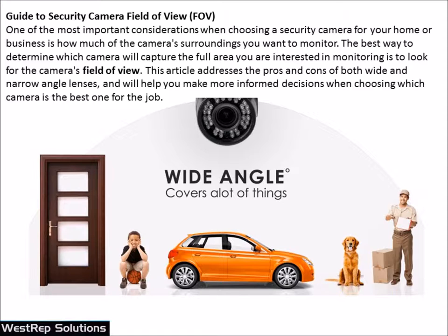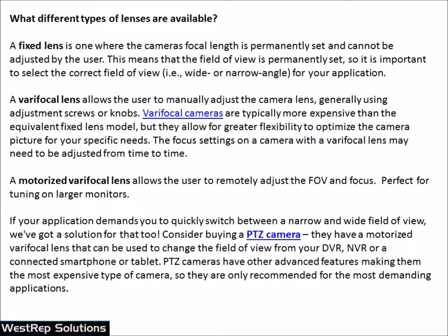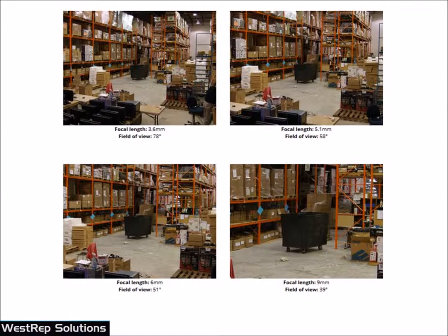Sometimes we want to see something a bit closer — to get a facial shot, a license plate, or specific detail without recording unnecessary walls. A varifocal lens allows you to adjust the field of view on site, bringing it from say 90 degrees down to 20 degrees to capture exactly the picture you're looking for. Many cameras today have motorized varifocal lenses, allowing you to adjust the field of view and focus remotely through software. For example, a 70-degree view might show a whole warehouse, while narrowing to 29 degrees gets you detail right at a cart or a vehicle coming through a gate.